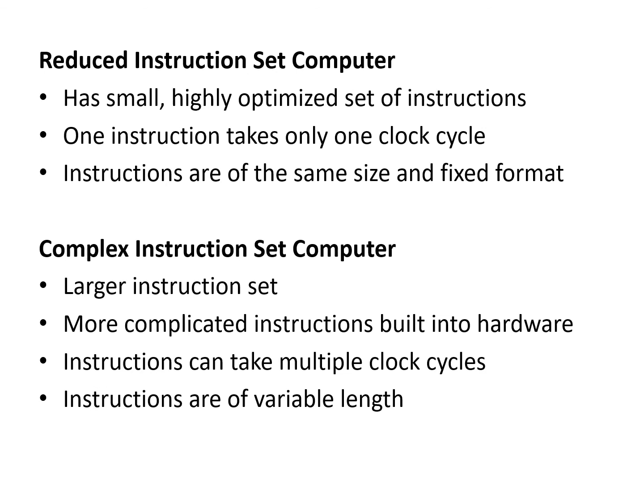A reduced instruction set computer (RISC) has a small, optimized set of instructions. Each instruction takes only one clock cycle, and instructions are of the same fixed format. A complex instruction set computer (CISC) consists of a larger instruction set; instructions can take multiple clock cycles and can have variable length.